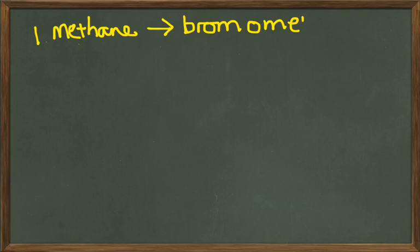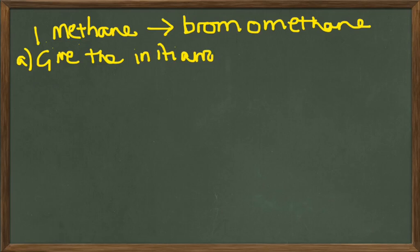So the first question is looking at how we halogenate methane to make bromomethane. So we're halogenating with bromine.